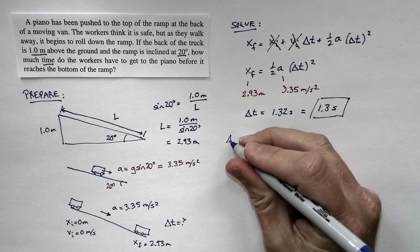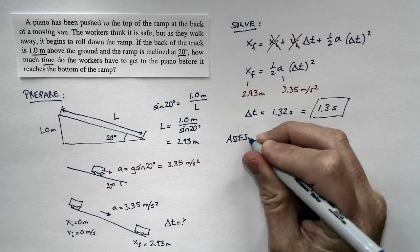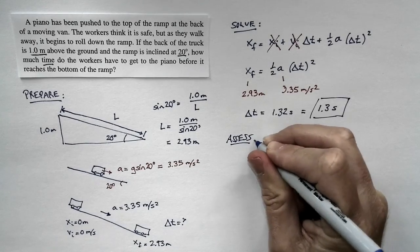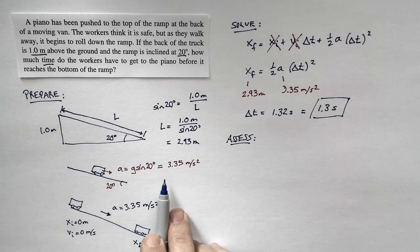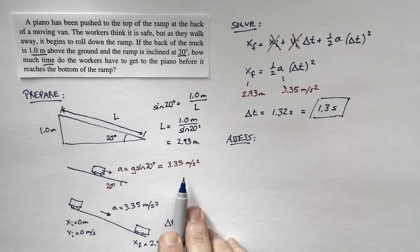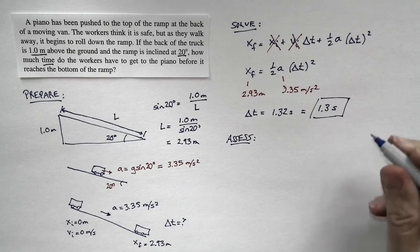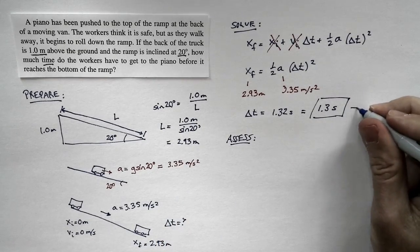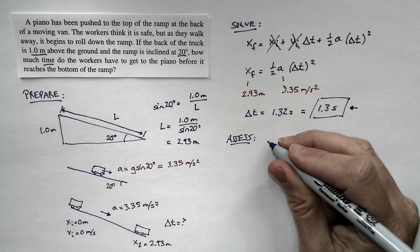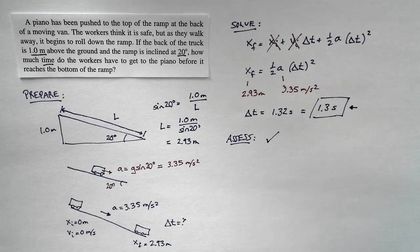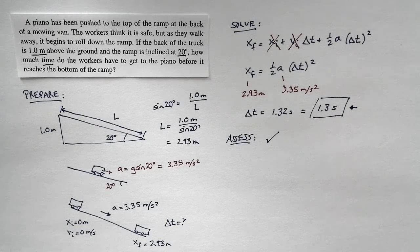Let's do a quick final assessment. At the start of the problem, we said the piano is only moving about 10 feet and the acceleration is about one-third of the acceleration of gravity, so we didn't expect it to take very long to reach the bottom of the ramp. In fact, that's exactly what we find — 1.3 seconds. Our answer matches our understanding of the way the world works. We'll see you in the next section.